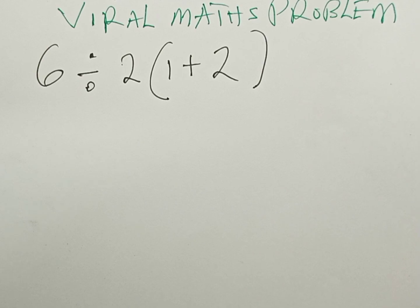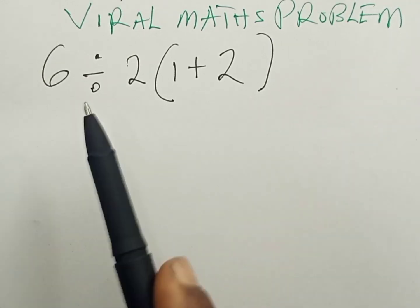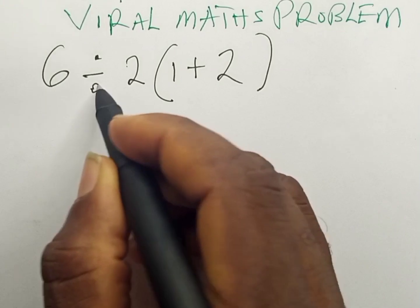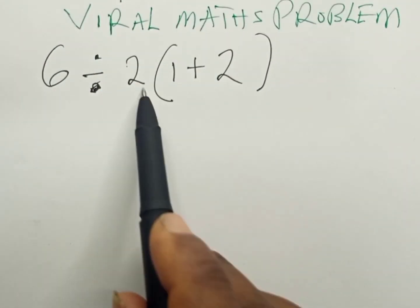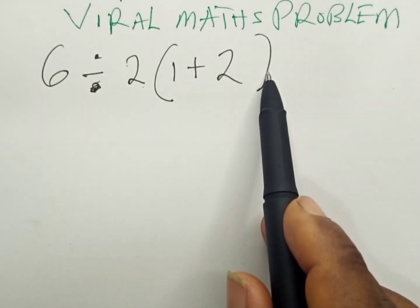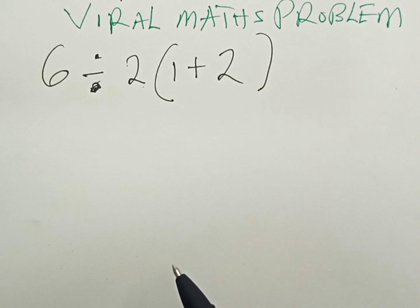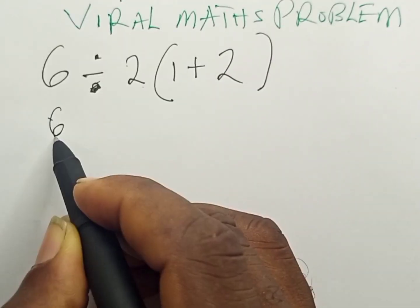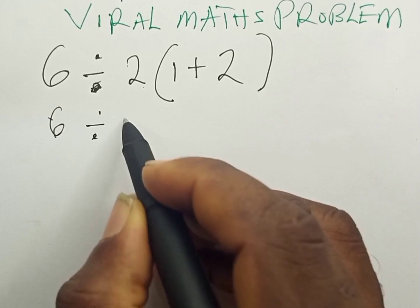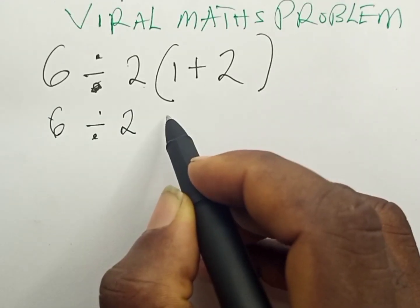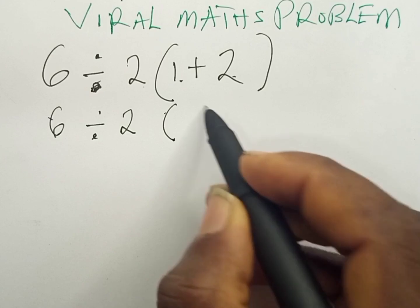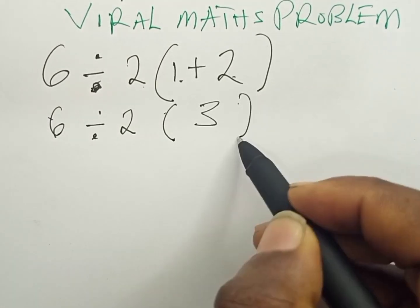Let us also look at it in this other way. 6 divided by 2, open bracket 1 plus 2. So for us to do this, we can have 6 divided by 2, open bracket 1 plus 2, which is 3, close bracket.